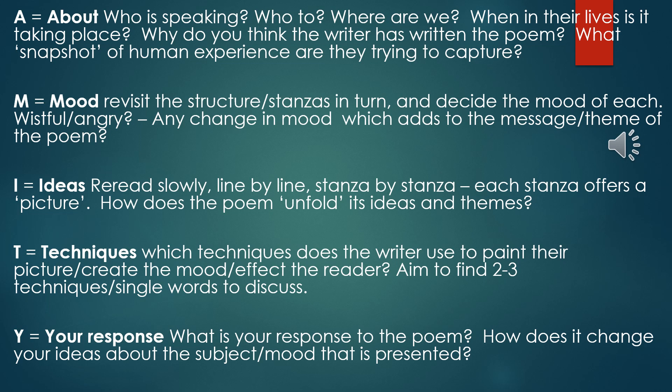For techniques, you're going to aim to find two to three different techniques or single words that you can pick out as showing meaning. The writer has carefully chosen these words and techniques to craft a picture, to create the mood, and to create an effect on the reader. It might be a simile that works particularly effectively, a carefully chosen adjective that uses emotive language, or repetition of a single word through the poem which highlights an overall idea. You need to find two or three because they will make up the bulk of your SWAN-style paragraphs when you discuss the poem in full.